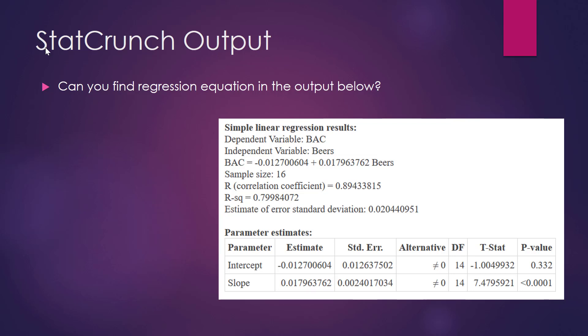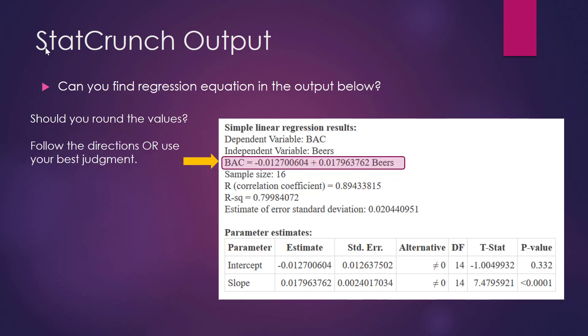Can you find the regression equation in the output? Pause this video, see if you can find it, and then unpause it to see if you are correct. If you said the equation is right there, then you are correct. One question students frequently ask is whether they should round the values. Generally speaking, you should either follow the directions given to you in the specific assignment or use your best judgment. In this problem, I've decided to round all values to four decimal places, so the blood alcohol content equals negative 0.0127 plus 0.0180 times beers.